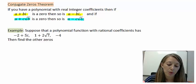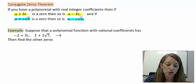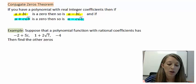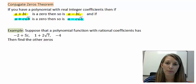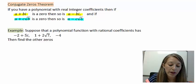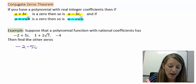In this example here, it's given us three zeros: negative 2 plus 5i, 1 plus 2 root 7, and negative 4. In this problem, all we want to do is find the other zeros. All we need to know is that roots and imaginary numbers come in conjugates. If I have negative 2 plus 5i, that means I must have negative 2 minus 5i as well.